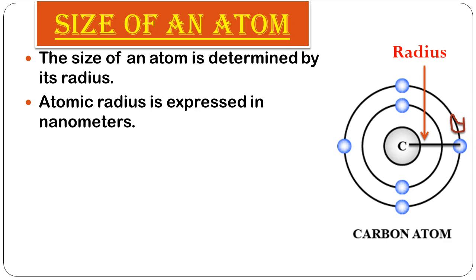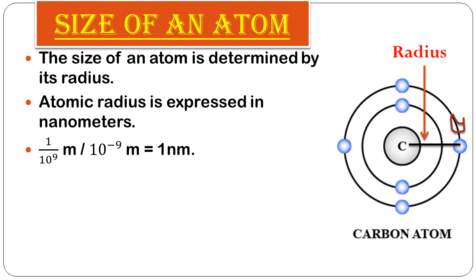One nanometer is equal to 10⁻⁹ meters, or equivalently 1 meter equals 10⁹ nanometers. You should remember this conversion between meters and nanometers.